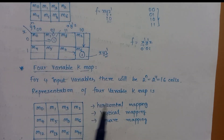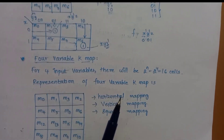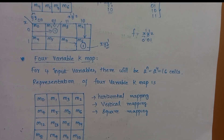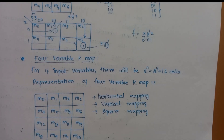Next, we have the 4-variable K-map. For 4 input variables, there will be 2^n equal to 2^4 equal to 16 cells. The 4-variable K-map has 16 cells total.